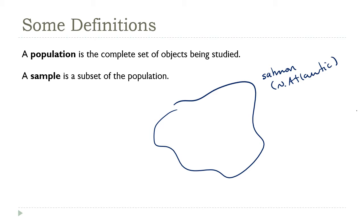What we usually can do is examine a subset of the population. For example, we could fish 100 salmon and then use them to represent the entire population. This subgroup is what we mean by a sample.